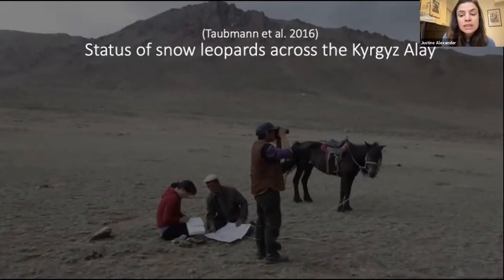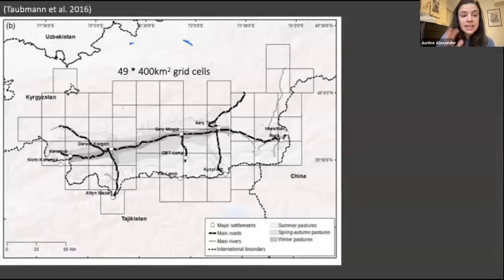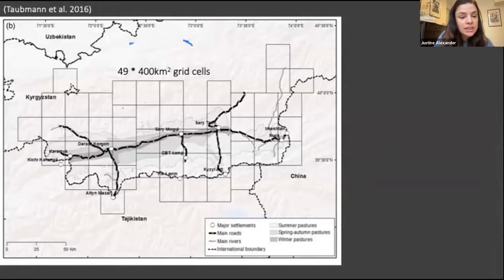The team was interested in assessing the status of snow leopards and other carnivores across the study area. They divided their study area of 14,000 kilometers squared into 49 grid cells. Each grid cell, as you can see, is around 400 kilometers squared.